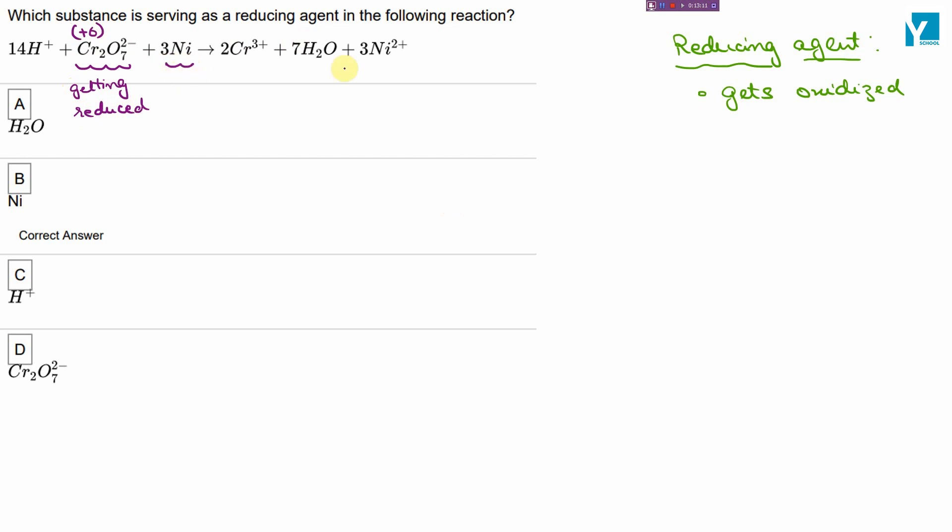Nickel, on the other hand, is getting oxidized. It is going from zero to plus two oxidation state. Nickel is losing electrons, so it gets oxidized. If this gets oxidized, this is your reducing agent. So B is your answer.